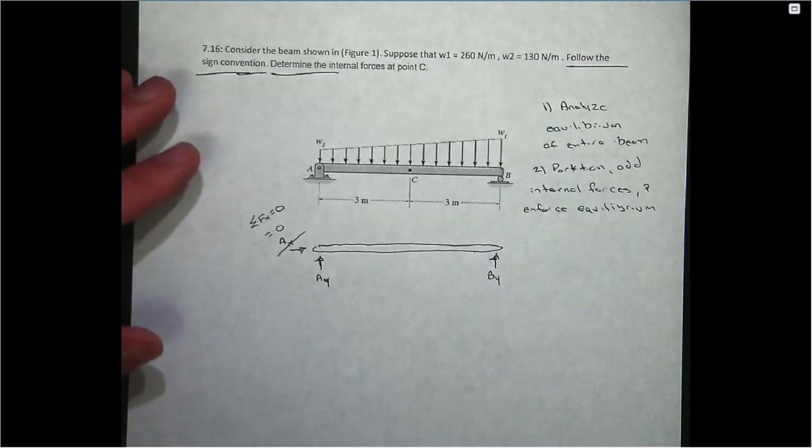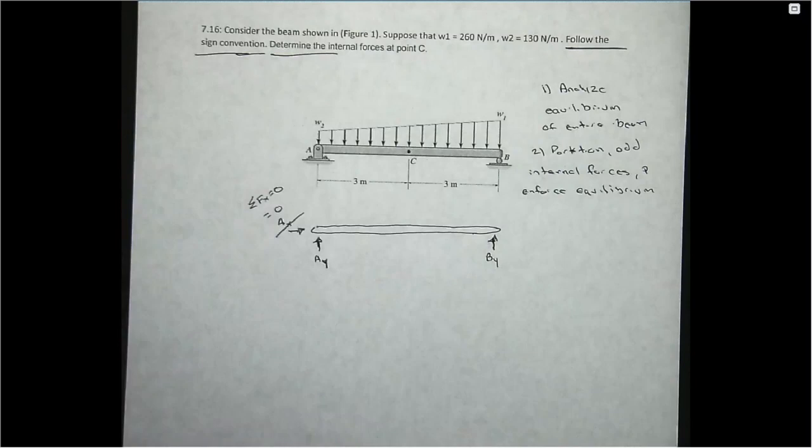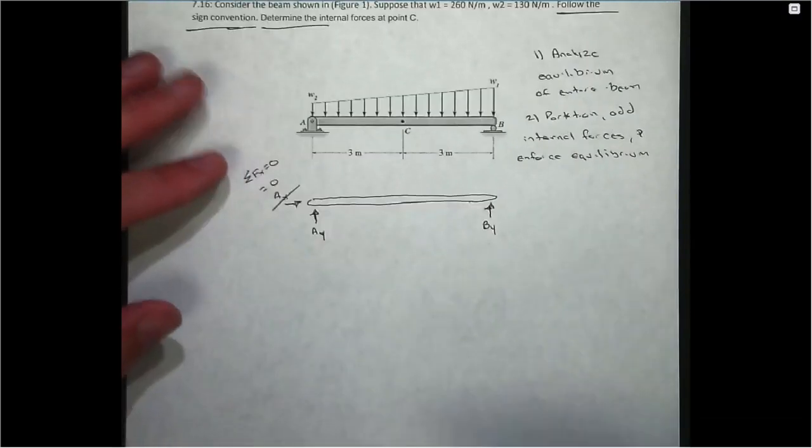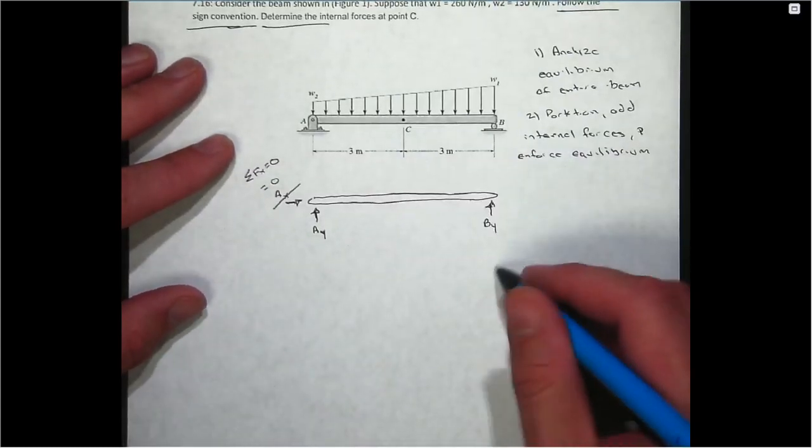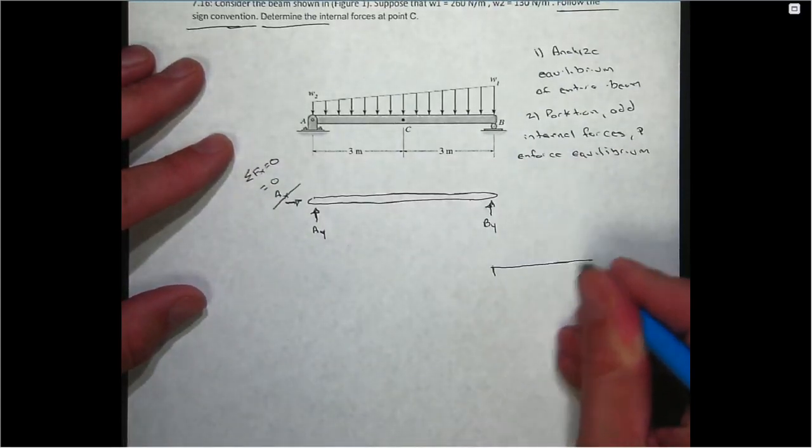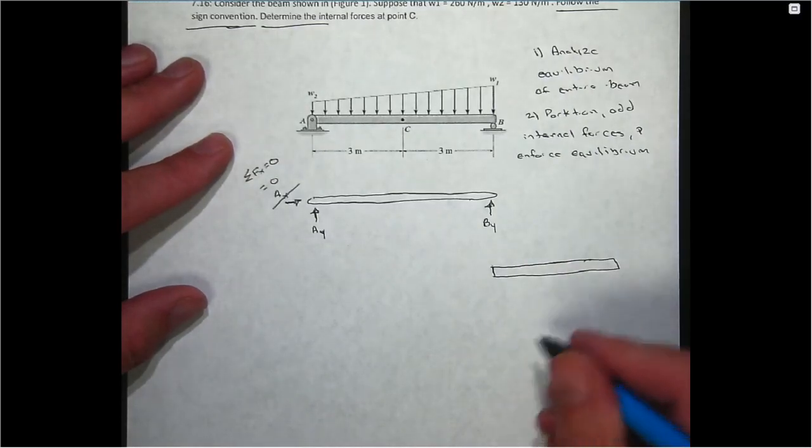Since B is a roller, I have an unknown vertical reaction at B. Now, the question becomes, how do I model the force associated with the distributed load? So hopefully you remember back when we originally introduced this concept in Chapter 4, that the way you do that is you compute both the centroid of the area formed by the distribution in order to determine where the equivalent load is placed.